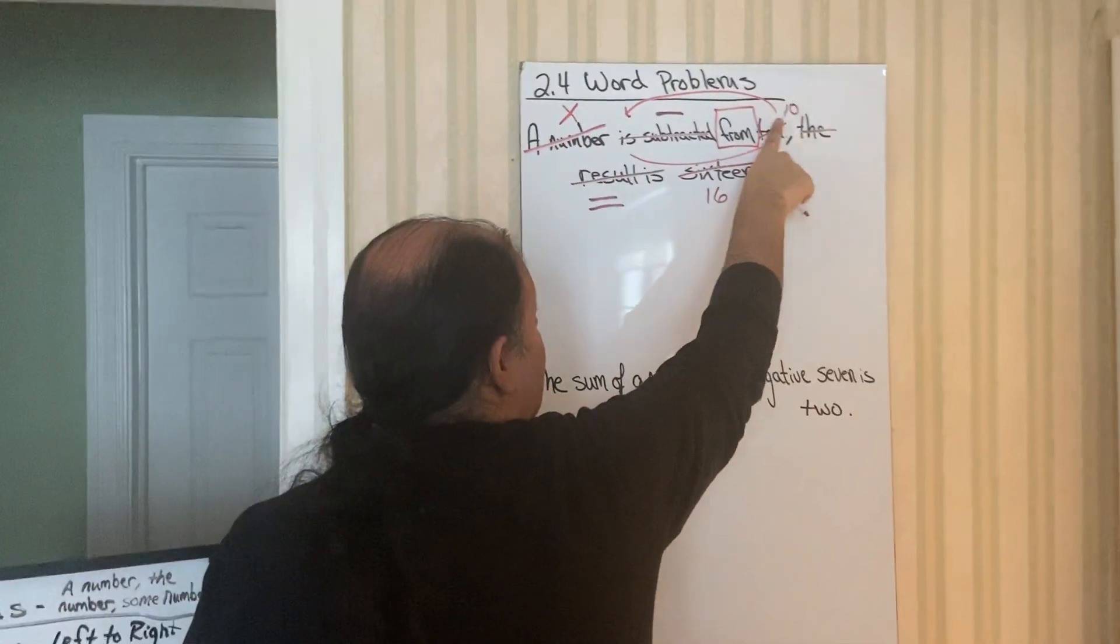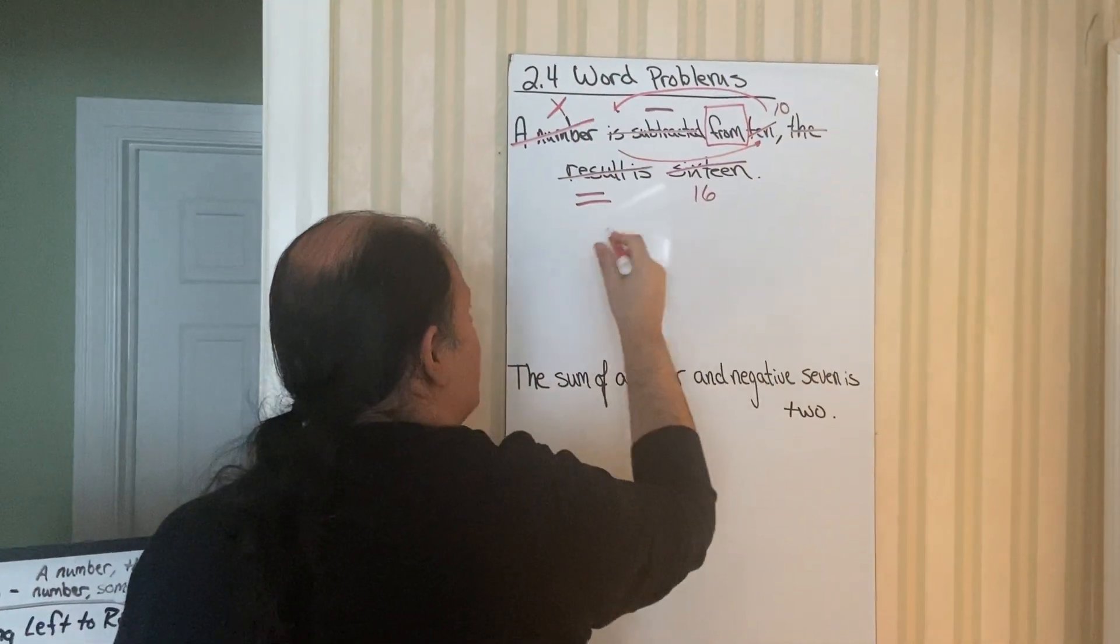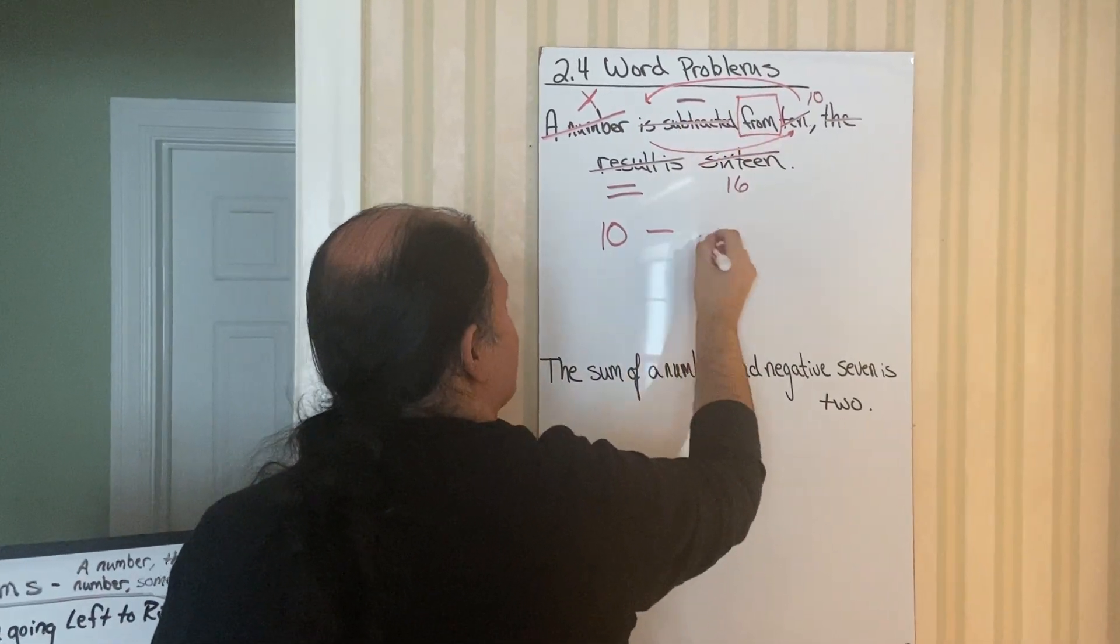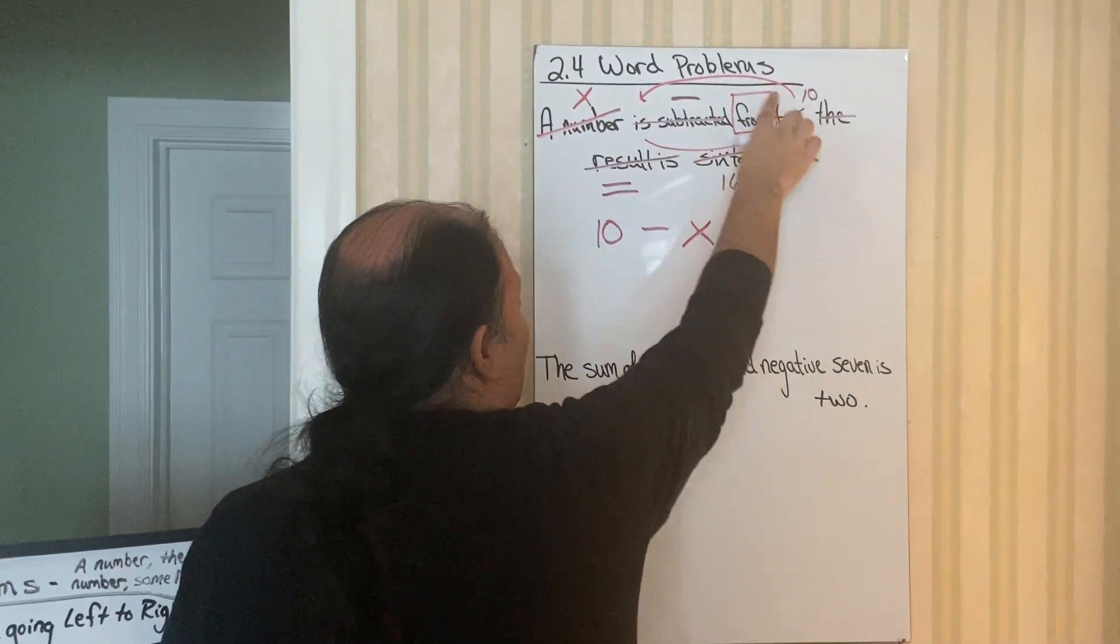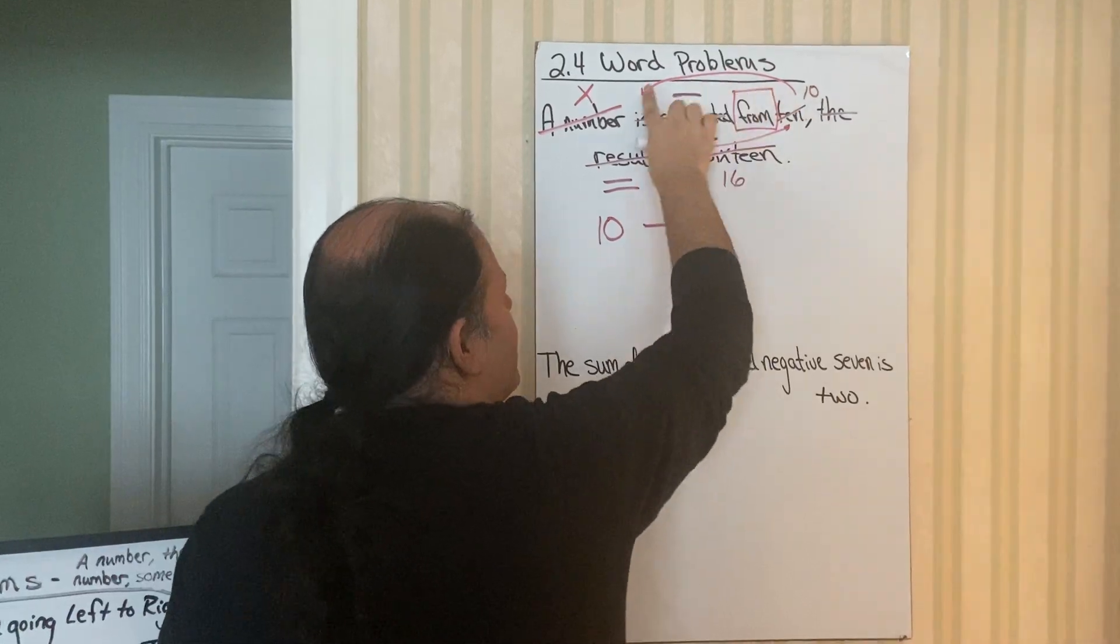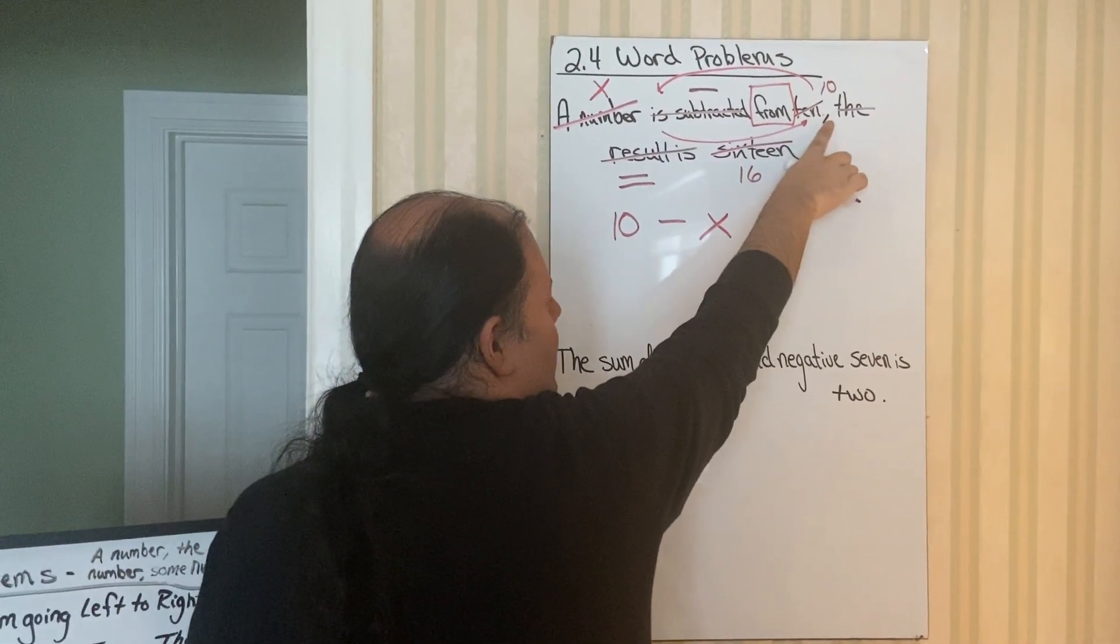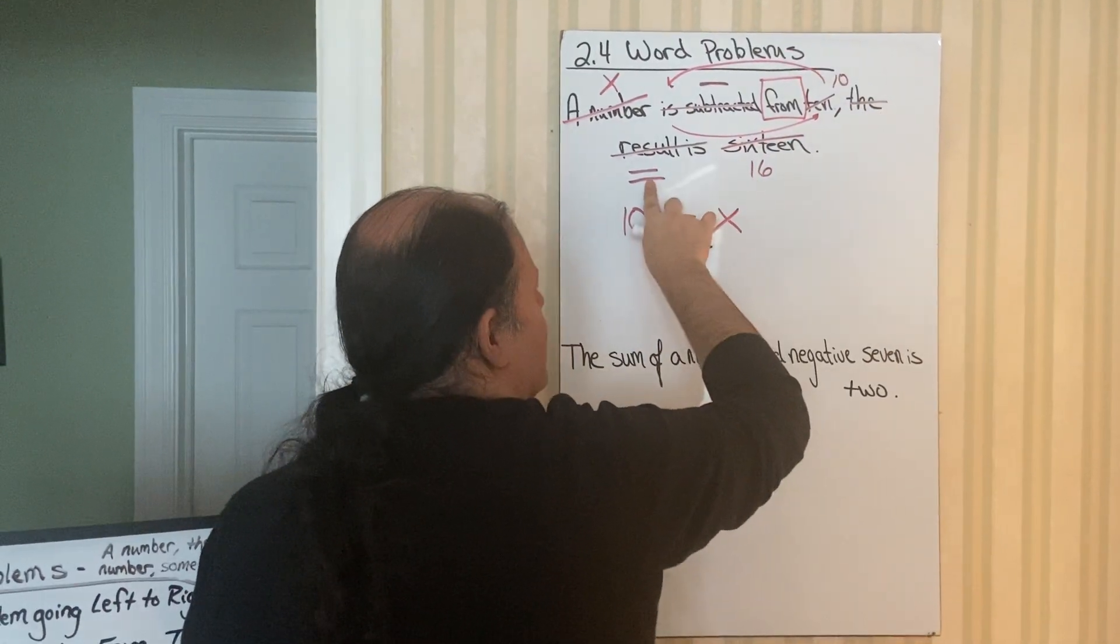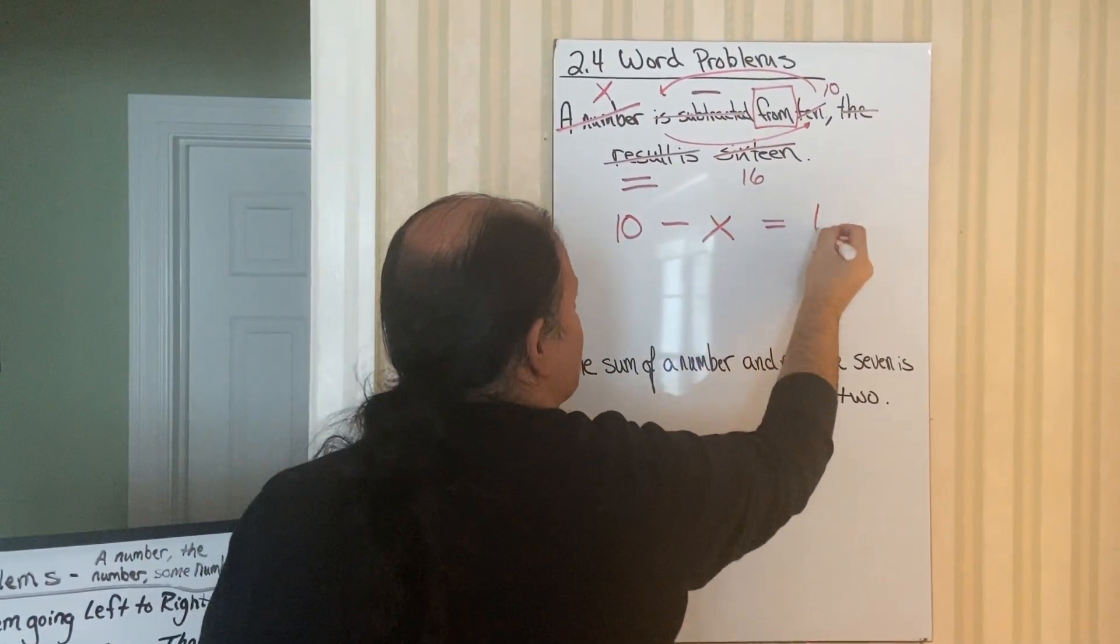x means to go back. 10 means to come forward. So it's actually 10 minus x. Only in this phrase does it pivot. Once we hit an equals sign or a comma, we're done with the flipping. We can continue. Equals 16.